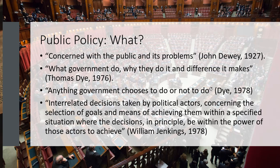When you look at the final definition, from William Jenkins, it says that public policy is interrelated decisions taken by political actors concerning the selection of goals and the means of achieving them within a specified situation, where those decisions are in principle within the power of those actors to achieve. This definition doesn't limit public policy to just one decision, but interrelated decisions taken by political actors — so a policy could be a set of decisions.